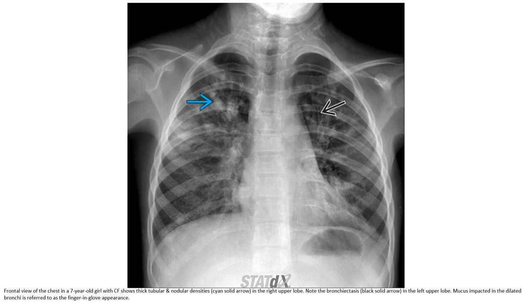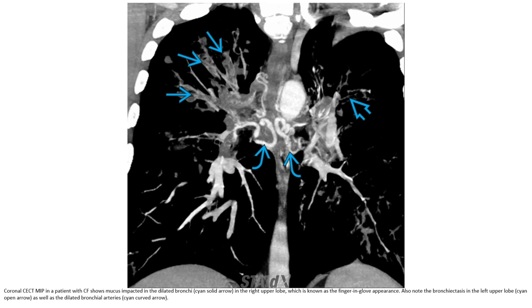In the left upper lobe, mucus impaction in the dilated bronchi is referred to as a finger-in-glove appearance. Frontal radiograph in a patient with cystic fibrosis showing mucus impaction in the dilated bronchi in the right upper lobe, known as a finger-in-glove appearance. Also note the bronchiectasis in the left upper lobe as well as the dilated bronchial artery.